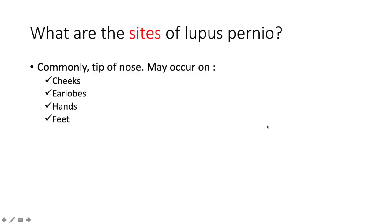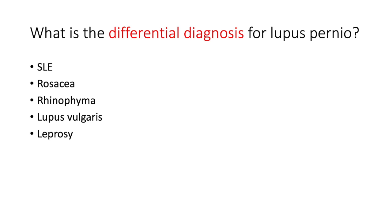What are the sites of lupus pernio? Commonly the tip of the nose, as we have seen, but it may also occur on the cheeks, the earlobes, the hands, and the feet. What is the differential diagnosis for lupus pernio?